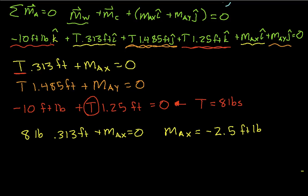And similarly, we can plug T in here, so we'll have 8 pounds times 1.485 feet plus may is equal to 0, which gives us then that may is equal to minus 11.88 foot-pounds.